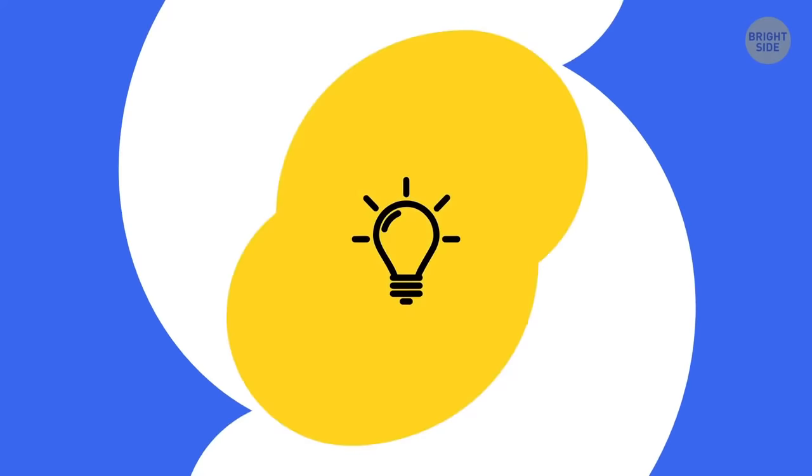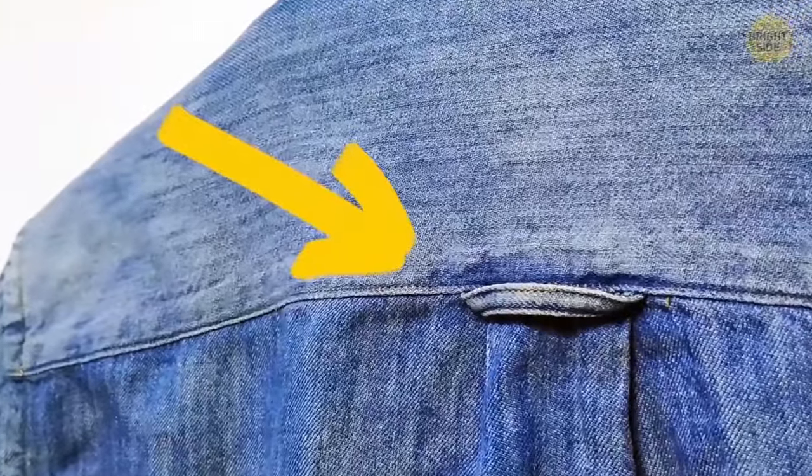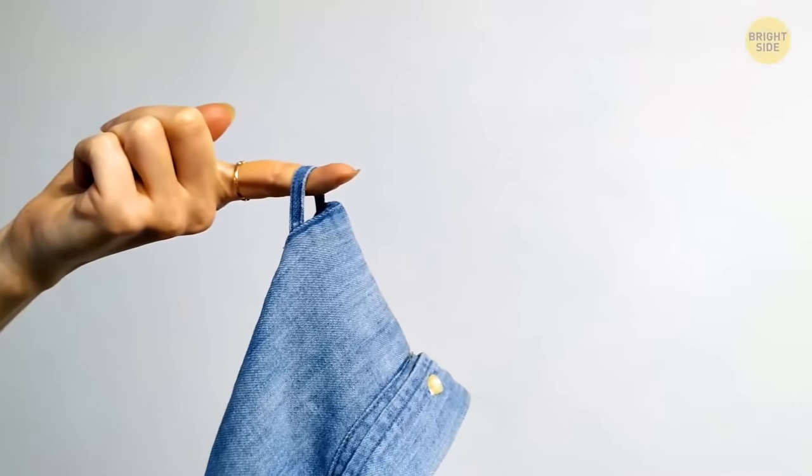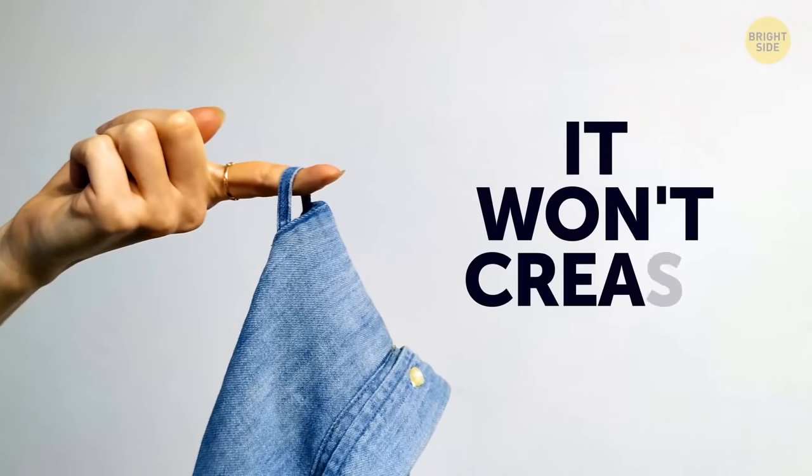If you don't have a hanger nearby, inspect your shirt for a small loop on the back. If there is one, you can use it to hang your shirt on a locker peg, and it won't crease.